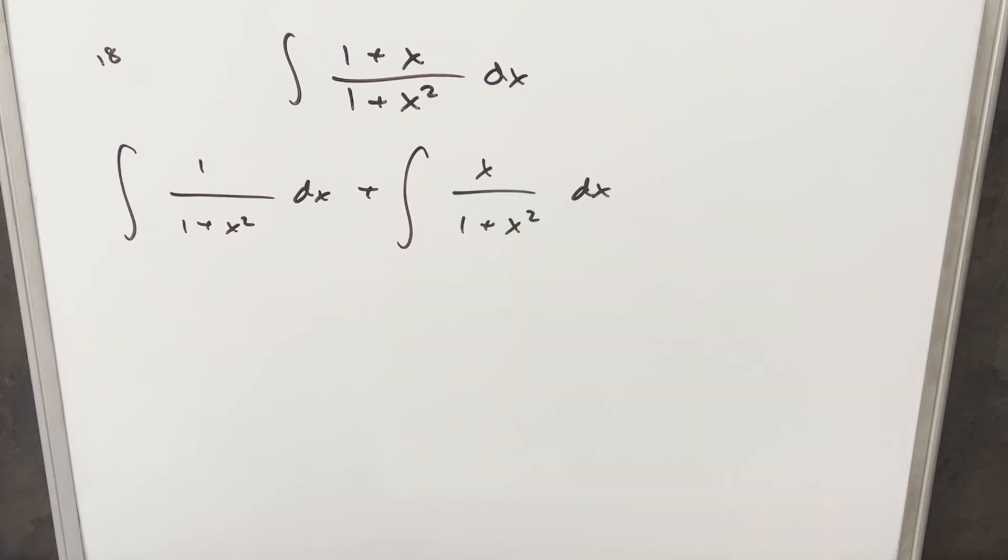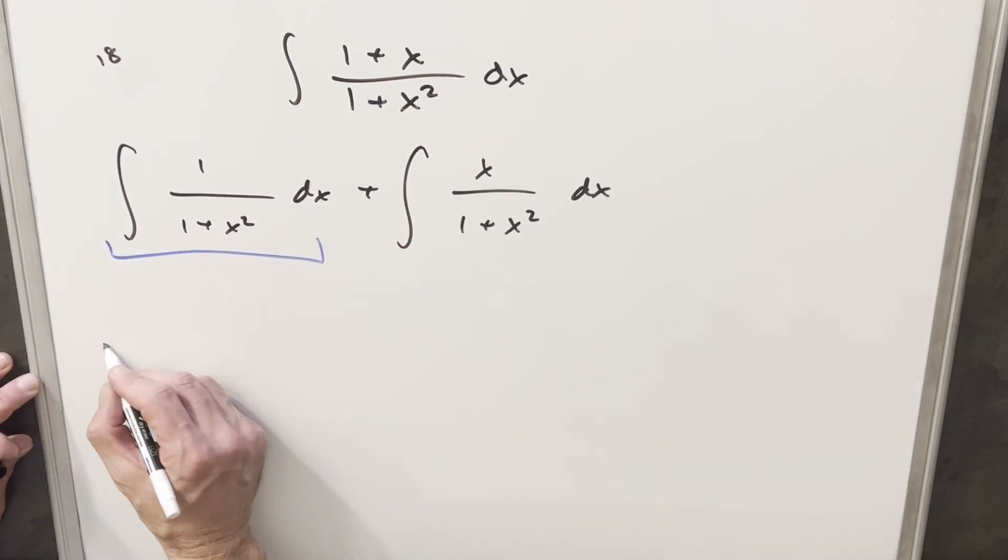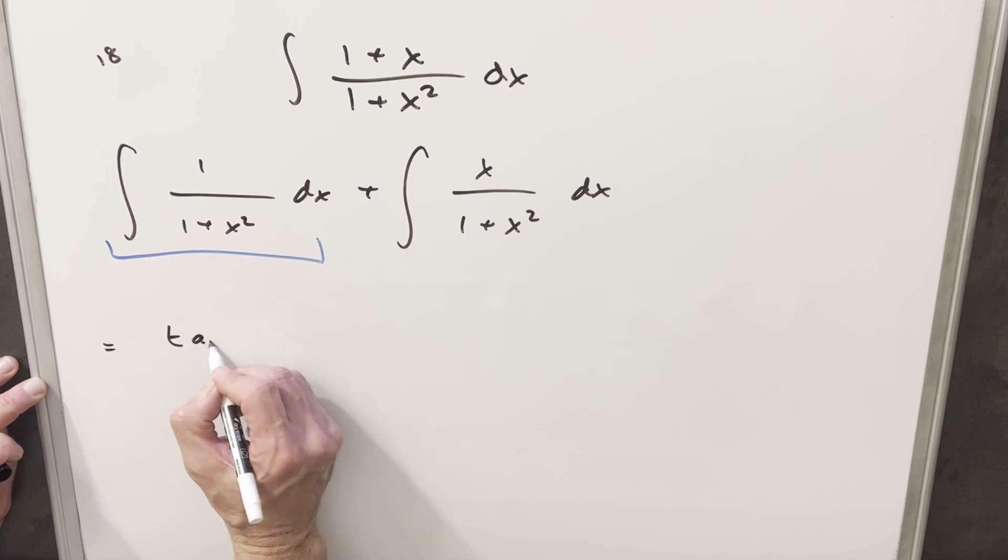But now for the first integral, this is a really well-known integral. This is actually just arctan. So for our first piece, we're going to have just arctan of x.